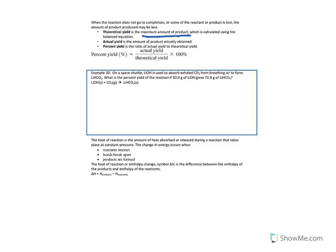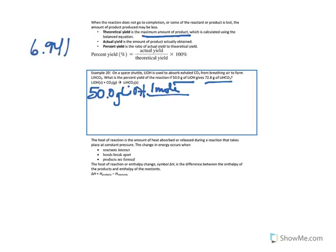On a space shuttle, lithium hydroxide is used to absorb exhaled CO2 from breathing air to form lithium hydrogen carbonate. What is the percent yield if 50 grams of lithium hydroxide gives 72.8 grams of lithium hydrogen carbonate? Since we're only given one starting amount, we don't need to worry about the limiting reactant. Step 1: convert 50 grams of LiOH to moles. One mole of LiOH weighs 23.951 grams — lithium is 6.941, oxygen is 16, and hydrogen is 1.01.